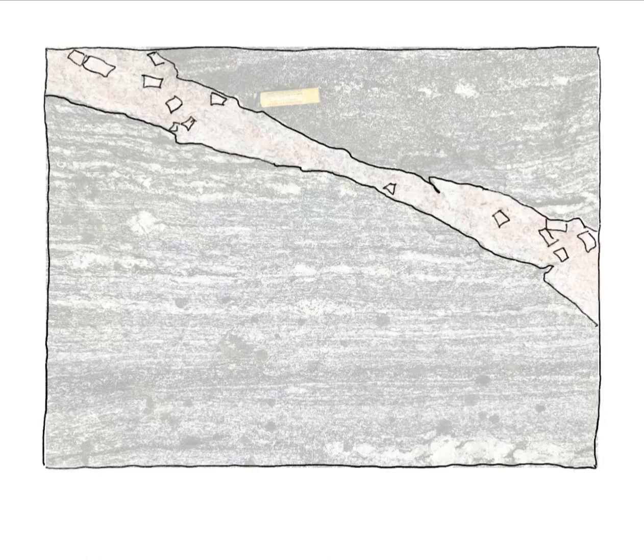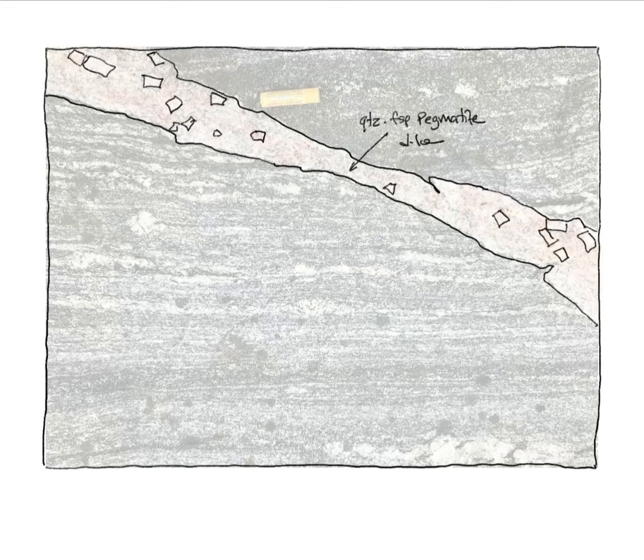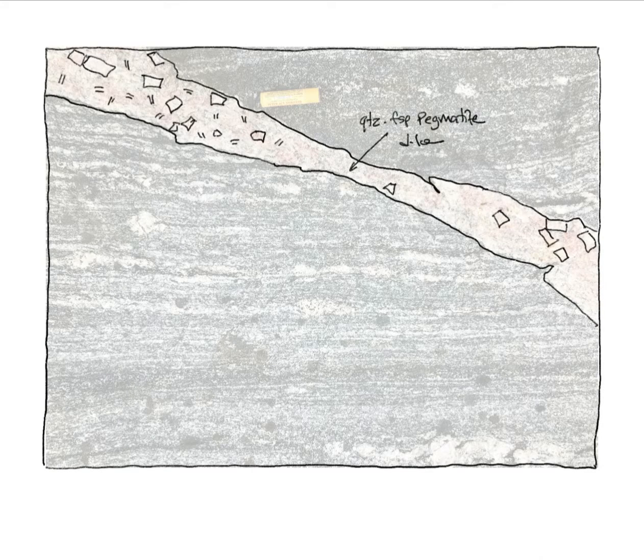Here our upper and lower limits are the lines separating the two major rock types, the gneiss and the pegmatite.